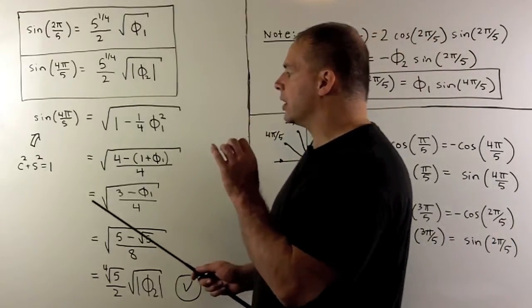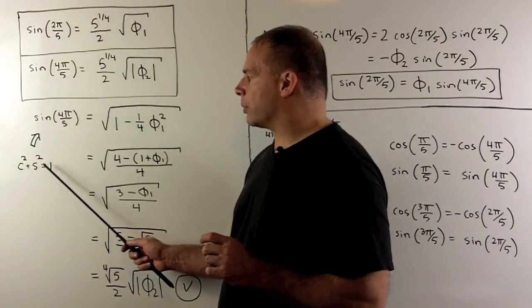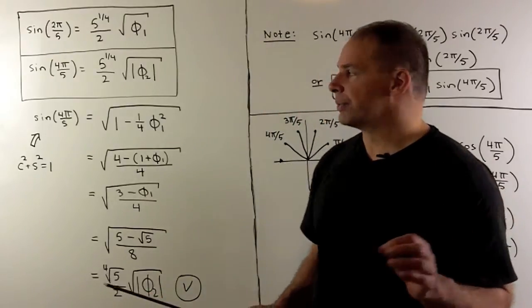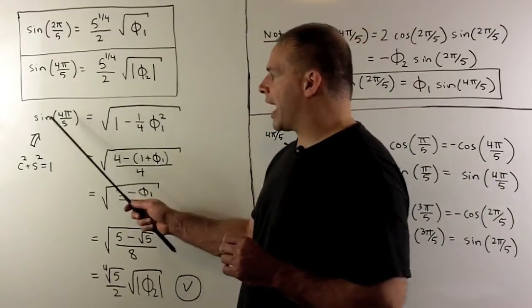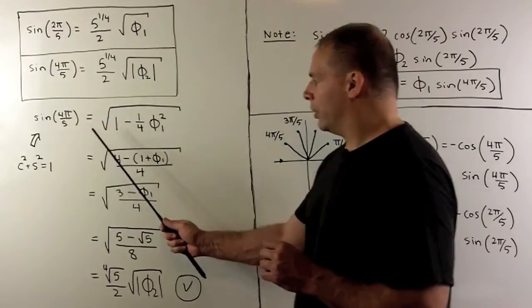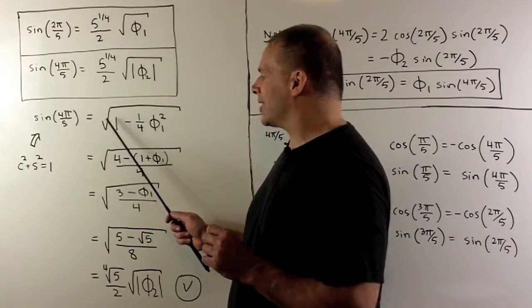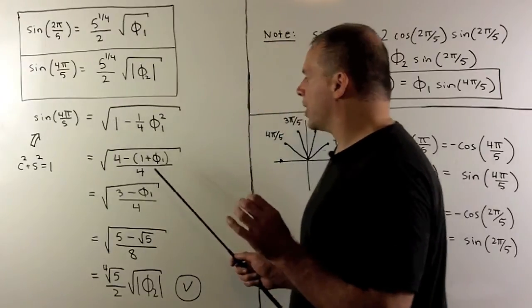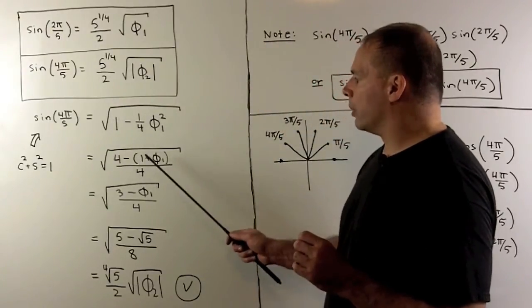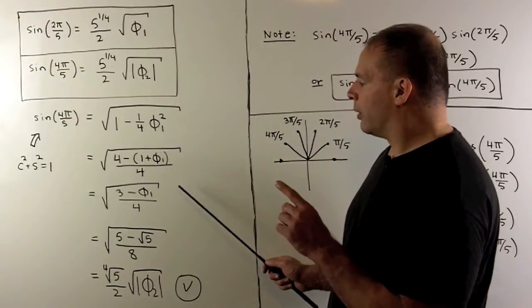Now, to get these, I just start with cosine² + sine² equals 1. Follow my nose. So for instance, for sine of 4π/5, we have this expression. We know that sine of 4π/5 is positive. I'll sub out φ₁² with 1 + φ₁. Then we'll follow our nose.